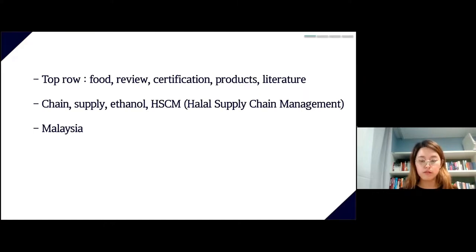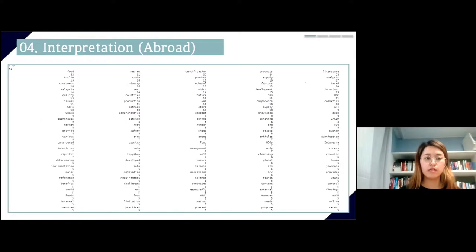For overseas research, the top row was food, review, certification, products, and literature, quite similar. Their significant words were different: chain and supply with 18 mentions each, almost with 15, HSCM (Halal supply chain management) with 11, and Malaysia with 14 mentions.